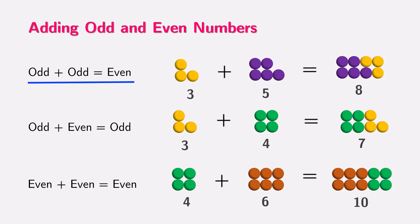So remember, adding two odd numbers gives an even result because the leftover parts pair up. Adding an odd and an even number gives an odd result because there is always one extra dot. And adding two even numbers gives an even result because all dots are perfectly paired.